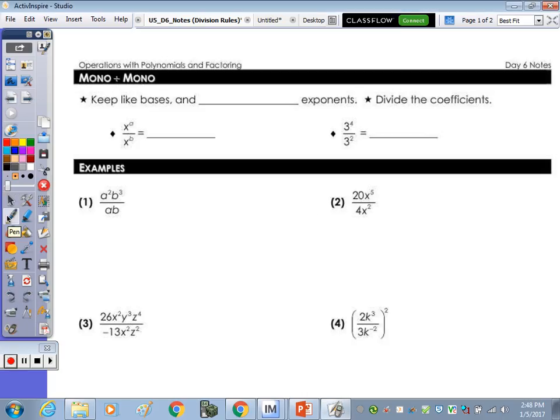When we're dividing a monomial by a monomial, and on the back we're going to divide a polynomial by a monomial, anytime we're dividing we keep the base and subtract the exponents. So the rule for x to the a divided by x to the b is x to the a minus b.